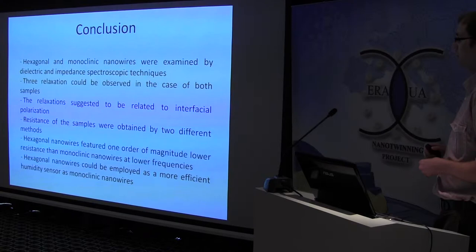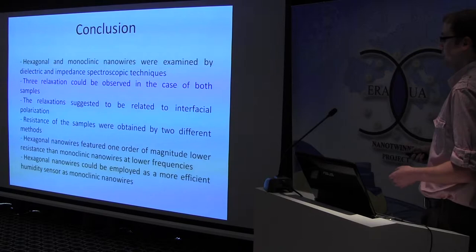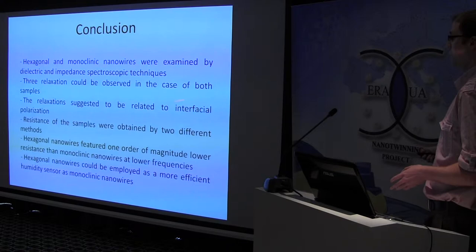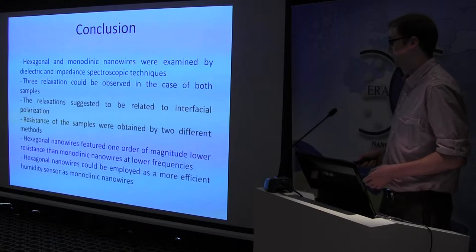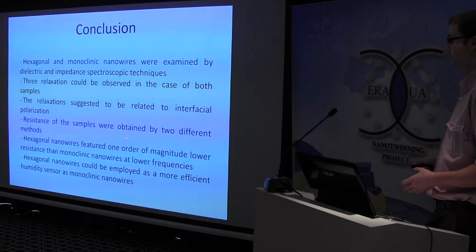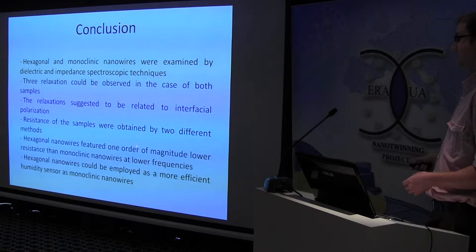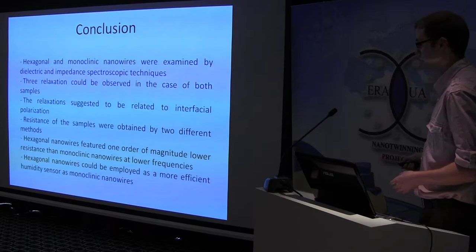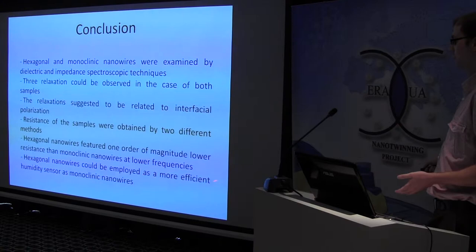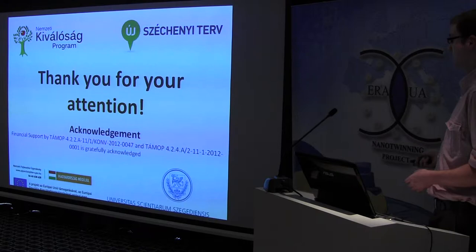And now, a short conclusion. Hexagonal and monoclinic nanowires were examined by dielectric and impedance spectroscopy techniques. Three relaxations could be observed in the case of both samples. The relaxations are suggested to be related to interfacial polarization. Resistance of the samples were obtained by two different methods. And hexagonal nanowires featured nearly one order of magnitude lower resistance than monoclinic nanowires at lower frequencies. So hexagonal nanowires could be employed as a more efficient humidity sensor than monoclinic nanowires. Thank you for your attention.